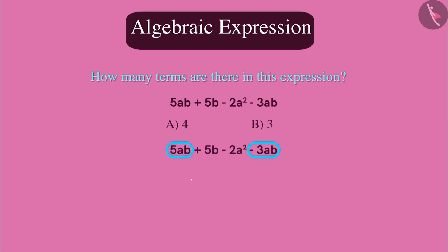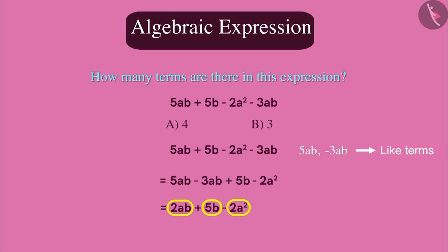Look at the first and the last part of this expression. Both of these terms are like terms, because both of them have the same algebraic factors which are a and b. That is why, by adding both of them, we have to make one term. In total, this expression has three terms.